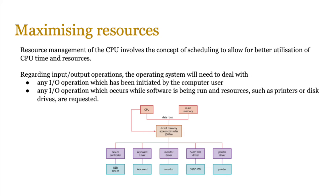Resource management of the CPU involves the concept of scheduling, which allows for better utilization of CPU time. Regarding input and output, the operating system deals with any I/O operation initiated by the user, any I/O that occurs while software is running, and resources such as printers or disk drives being requested. For example, a user wants to print something and at the same time the printer sends an interrupt saying it's run out of paper — all of that is handled by the operating system.